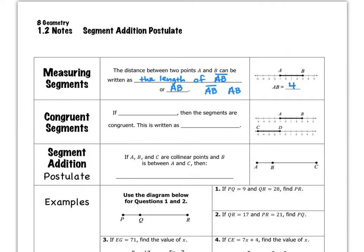I also want to talk about congruent segments. In geometry, congruent means equal. So, if the measure of line segment AB is equal to the measure of line segment CD — as you can see over here on the right, they're both 4 units — then we say the segments are congruent. The way we write that is: line segment AB, including the bar, is congruent to line segment CD, using the equal sign with that little swish over it. This first statement says the length of AB equals the length of CD. Down here, we use the congruent symbol because we're talking about line segments.